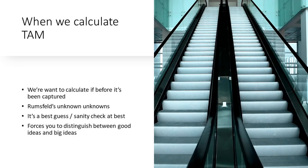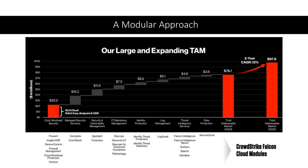Calculating TAM is very difficult because we want to calculate it before it's been captured. If it's Blue Ocean, then we don't know anything about it and we face Rumsfeld's unknown unknowns. It's really a best guess and a sanity check at best. But what it does do is force you to distinguish between good ideas and big ideas. And some of the firms that we look at have very interesting ways of describing their TAM.